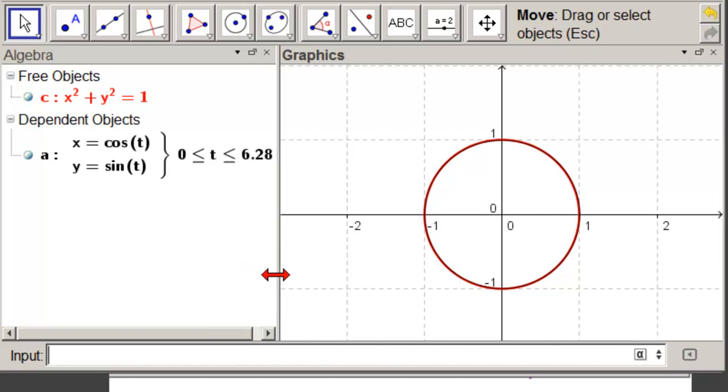Let's move this over so we can see that we're going to 2 pi. And now what we really want to see is not only that our parameterization is good, but that our interval is good. So how do we do that?